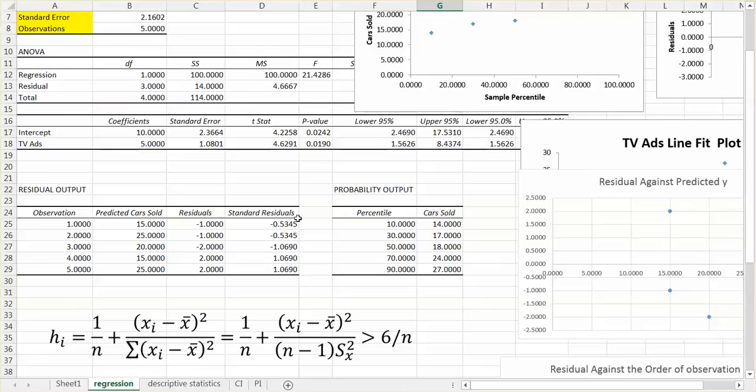So fortunately, in this case, we cannot find outliers because all the observations here, all the standard residuals here are larger than negative two and smaller than positive two. So none of them are outliers.